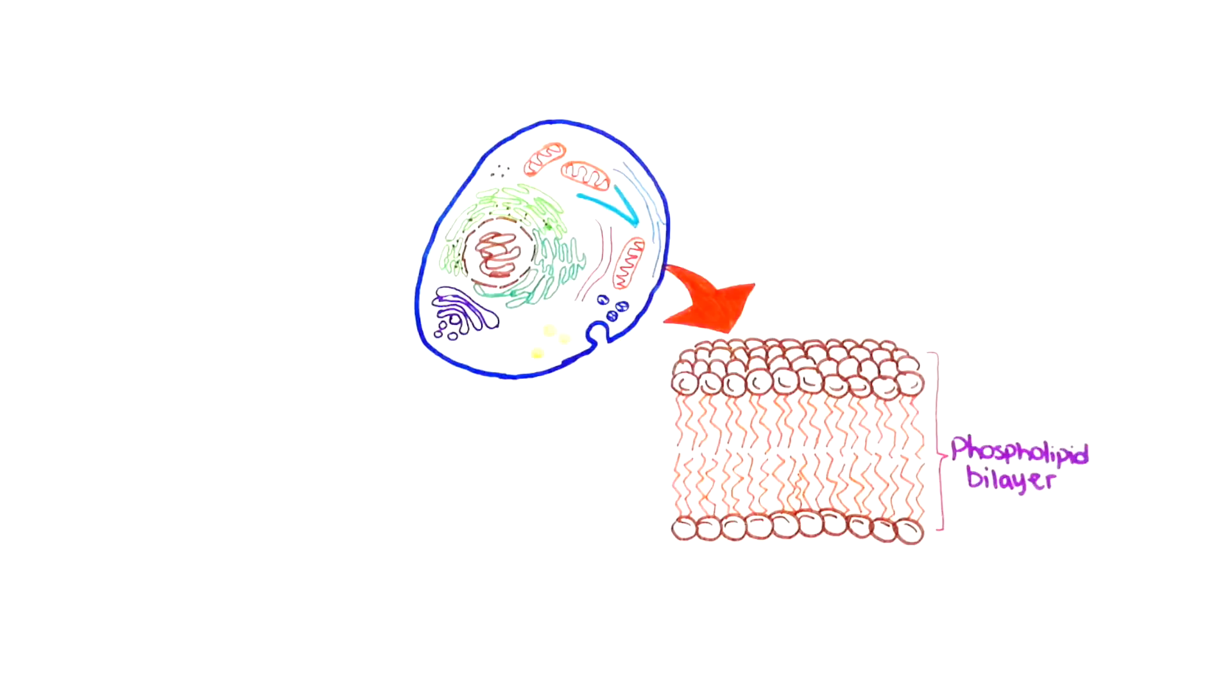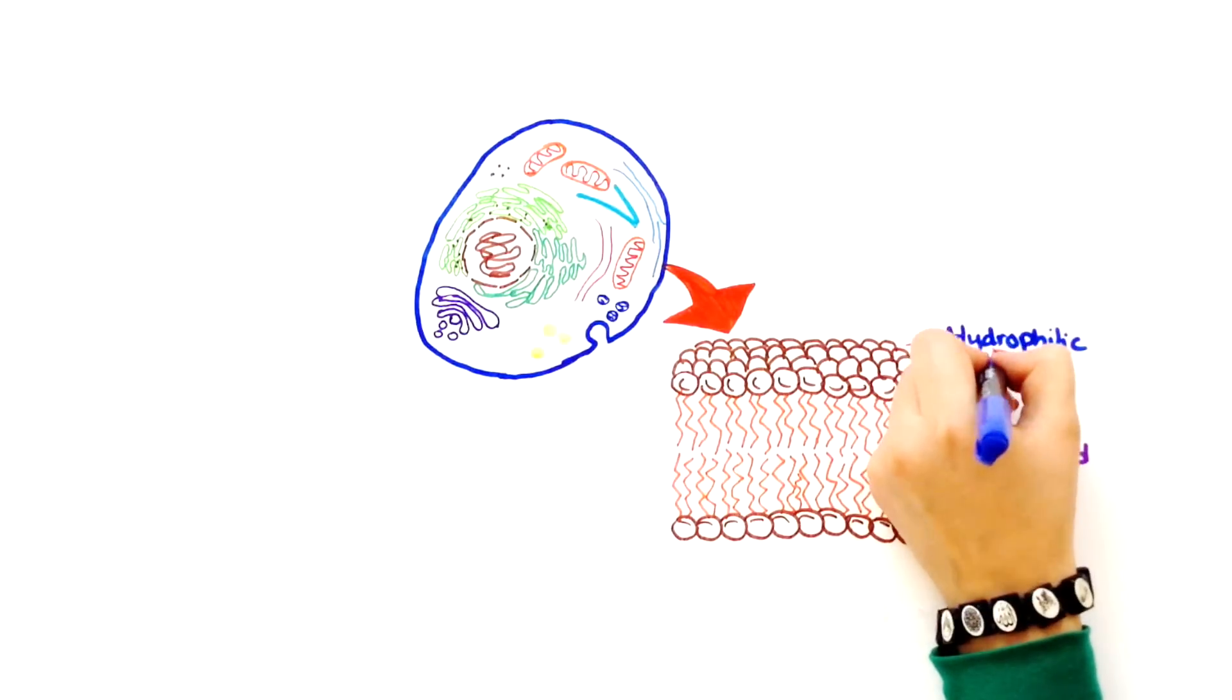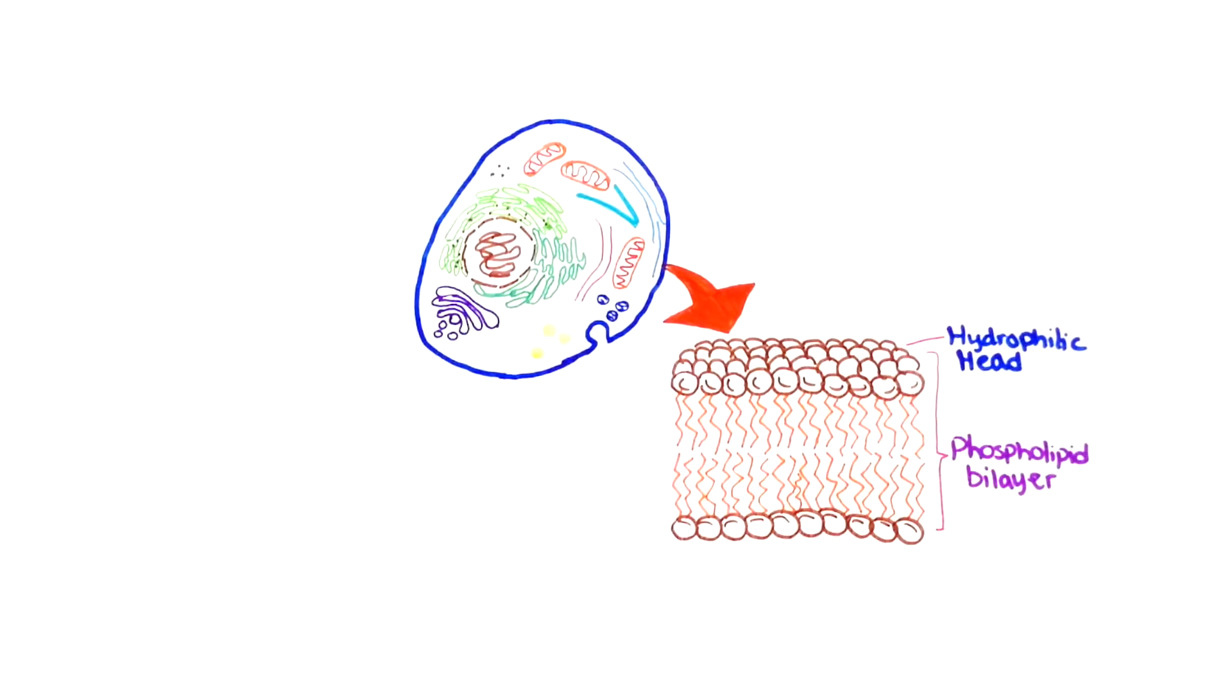The most abundant class of lipid molecules found in cell membranes is the phospholipid, which are amphipathic, meaning they have a part that likes water and a part that hates water. The phospholipids are arranged in a bilayer with their polar, hydrophilic, water-loving heads facing outwards and their non-polar, hydrophobic, water-fearing tails facing each other in the middle of the bilayer.